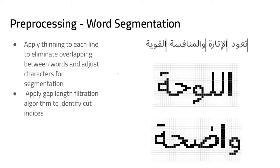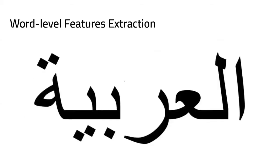After isolating each line, we performed word segmentation, outputting each line as individual words. To achieve this, we applied thinning to isolate words from each other, and we created a gap length filtration dependent on the text itself, allowing us to take each word on its own.